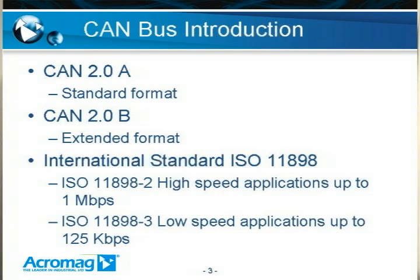There are two international standards. ISO 11898-2 is a high-speed CAN at one megabit per second, and then there is ISO 11898-3, which is a low-speed CAN application at 125 kilobits per second.